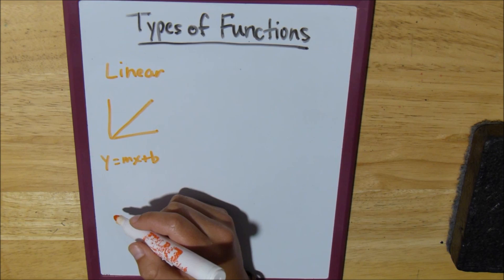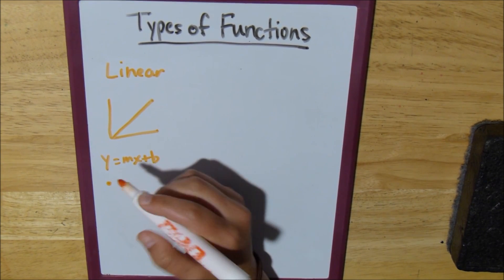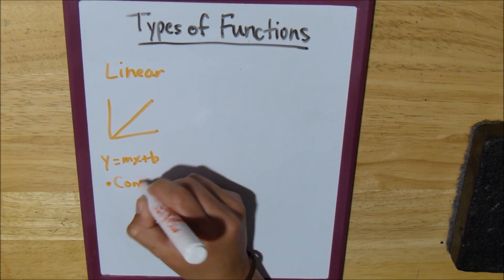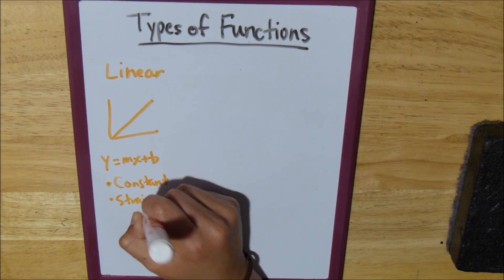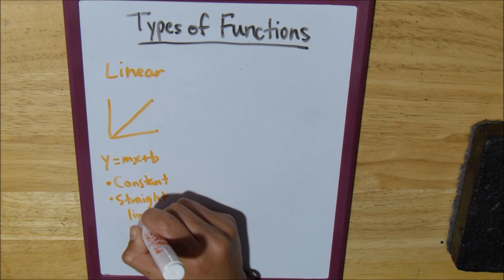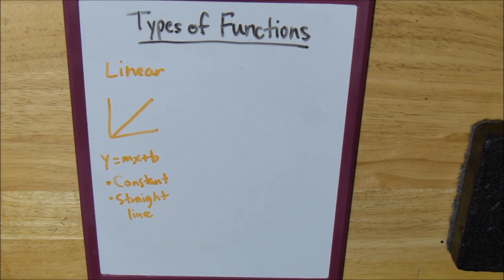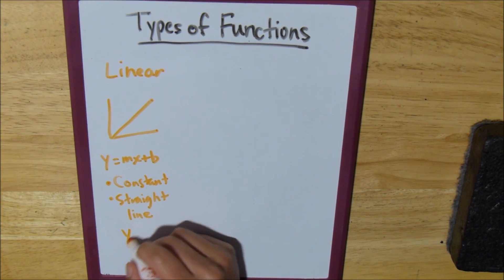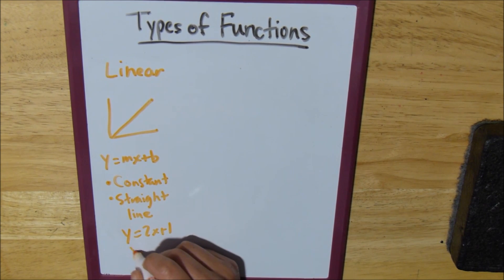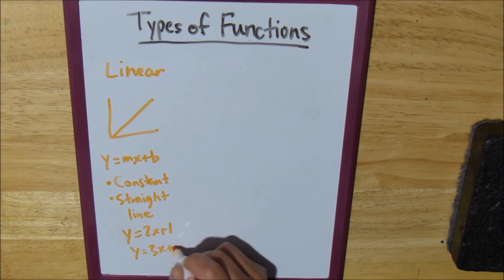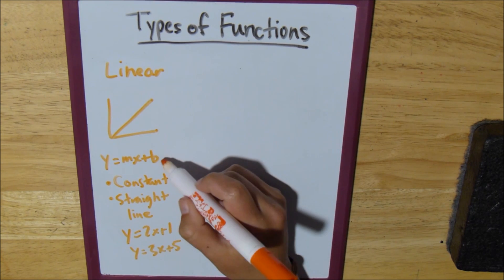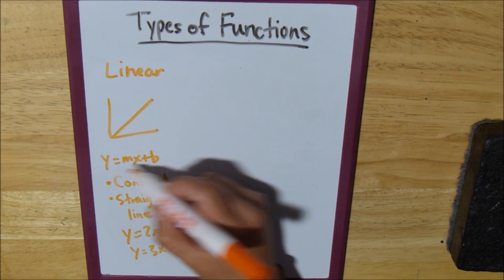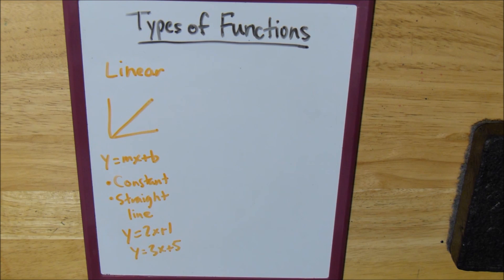And really, our defining characteristics are just that it's constant and it has a straight line. So this could be anything like y equals 2x plus 1, or y equals 3x plus 5, really any function that has this sort of basic structure to it.